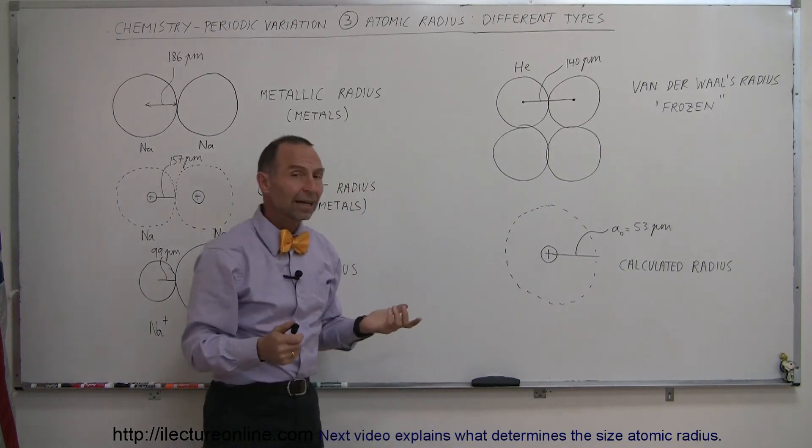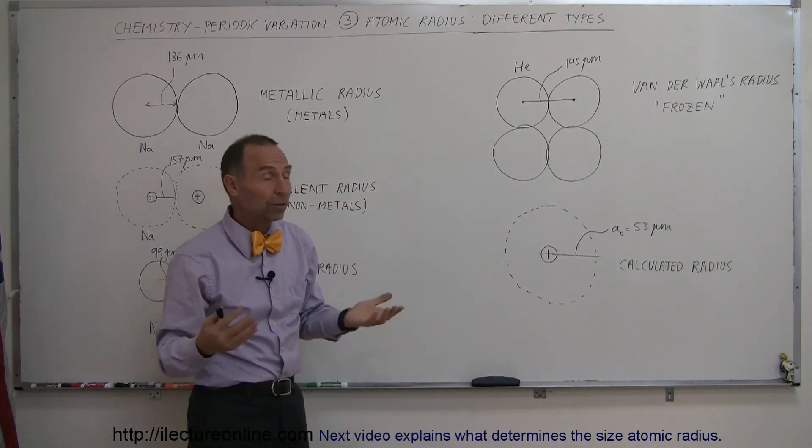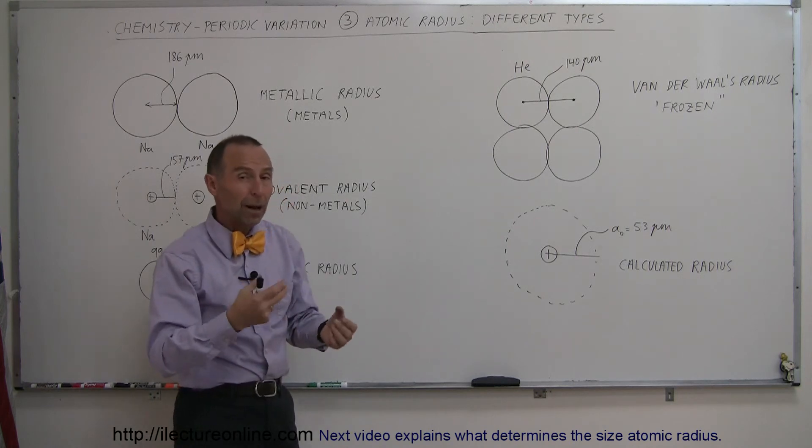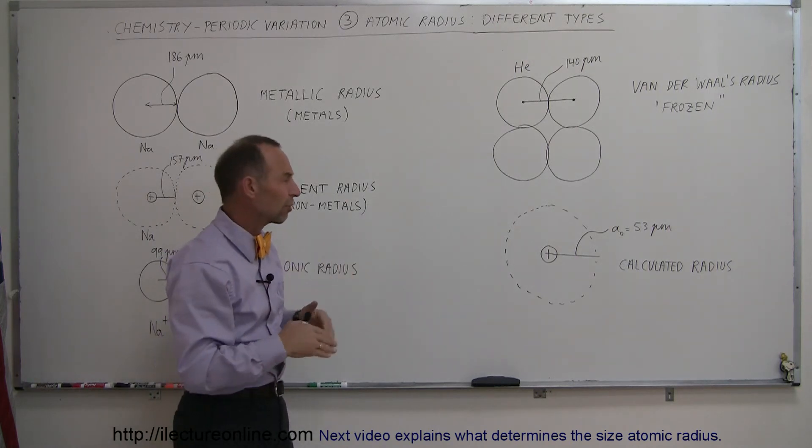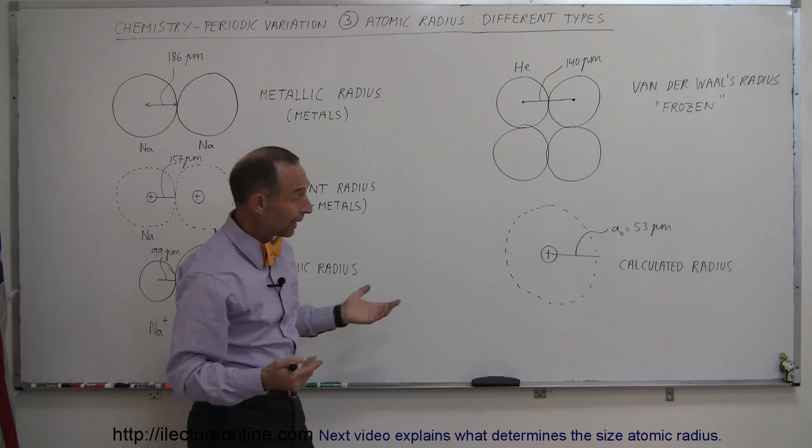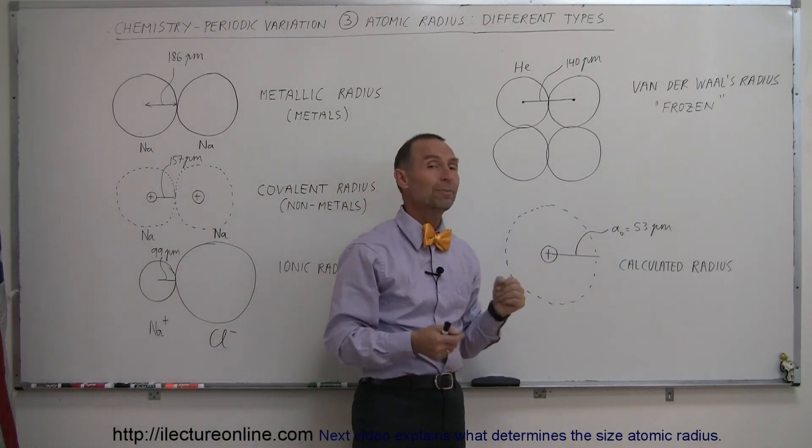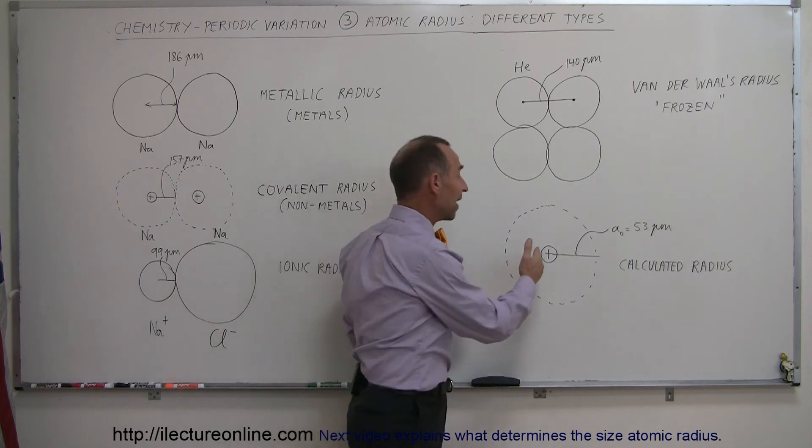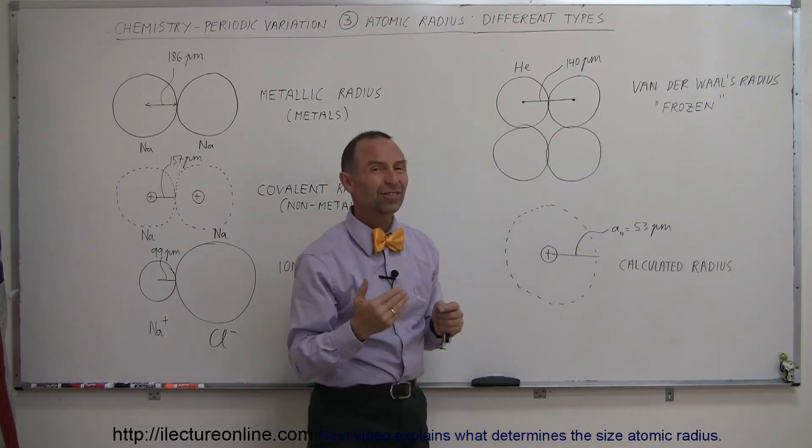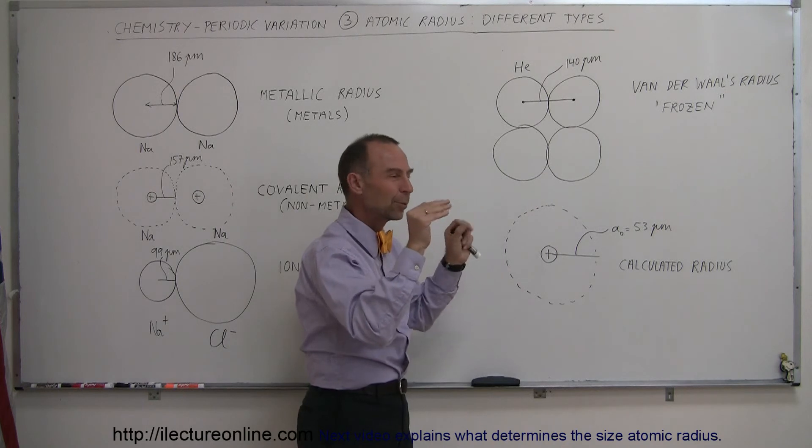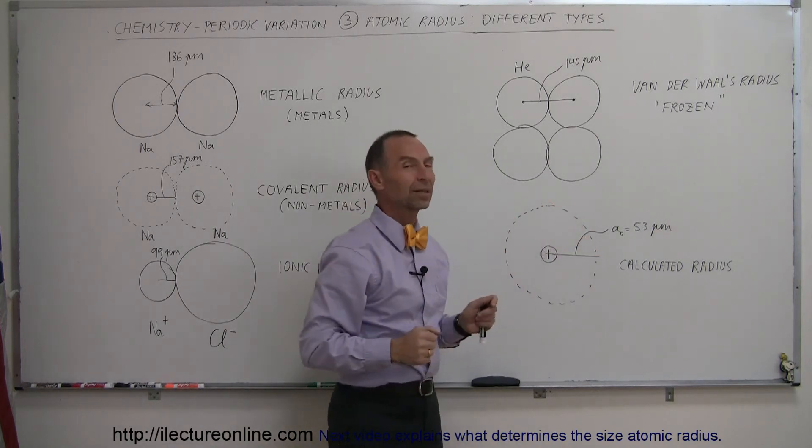And finally, in some cases, we can simply calculate what we expect the radius to be based upon the properties and the quantum mechanic states of the electrons in orbit around the nucleus. In the case of hydrogen, we know that the atomic radius is 53 picometers, but that's where we find the highest probability for the electron to exist and that would then become the theoretical radius of that particular atom.